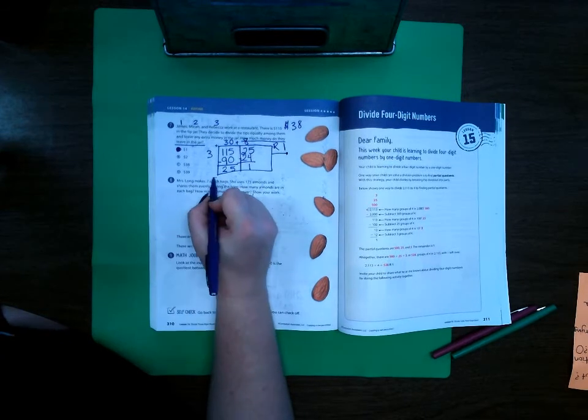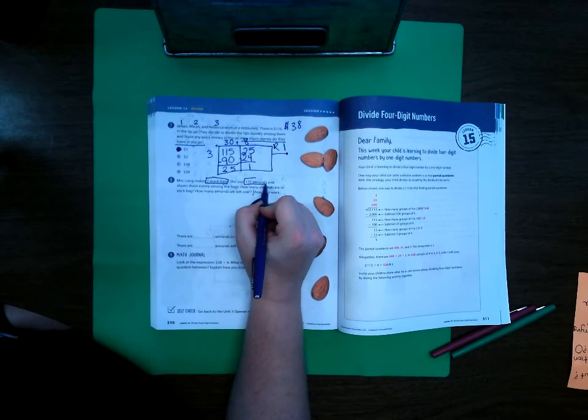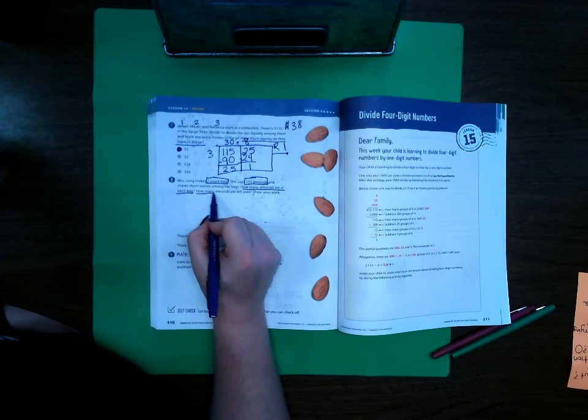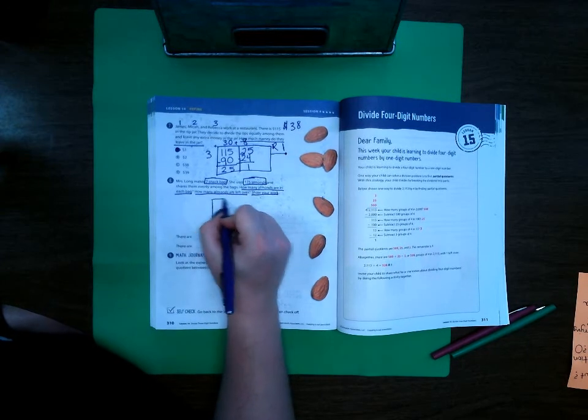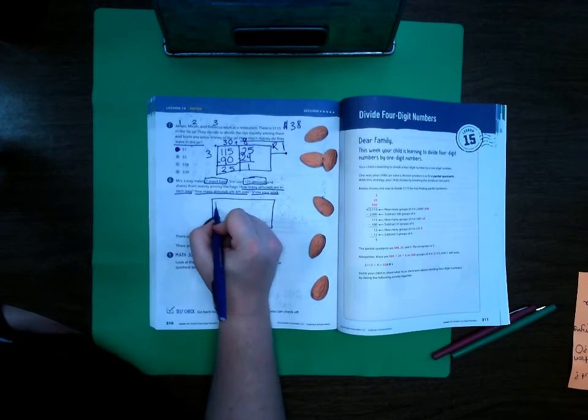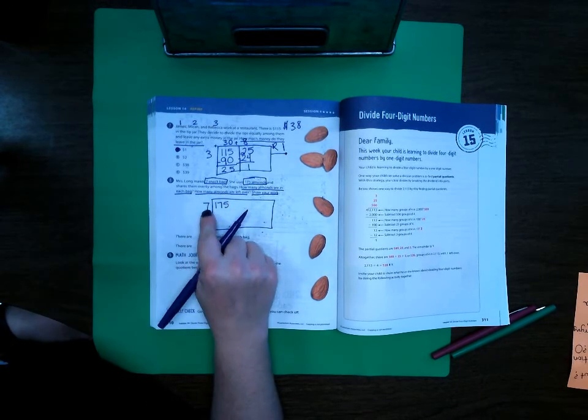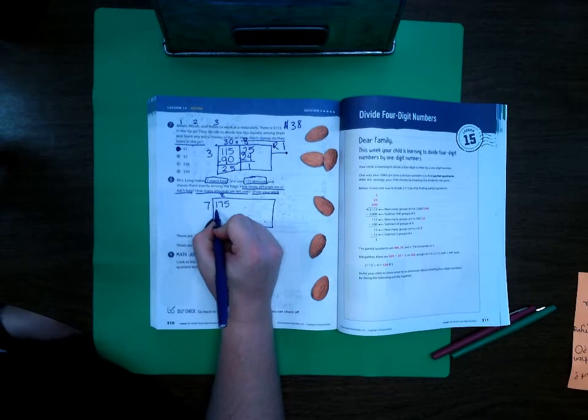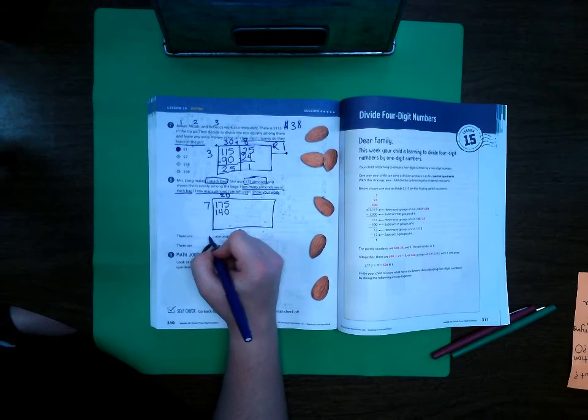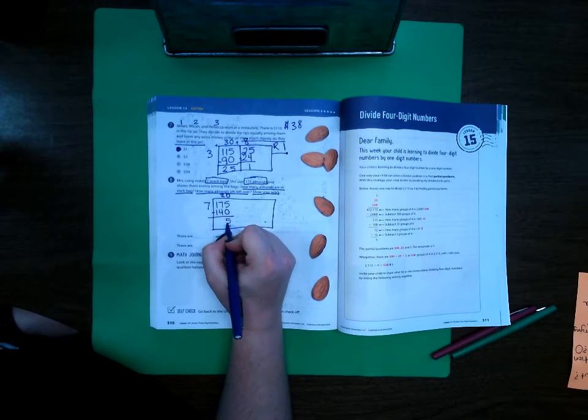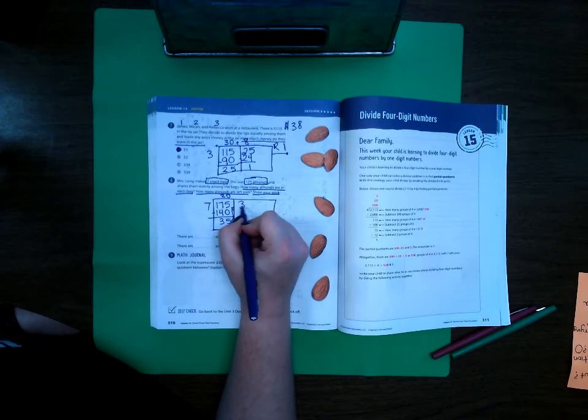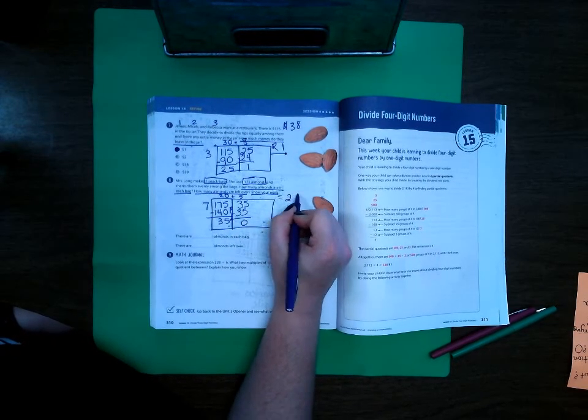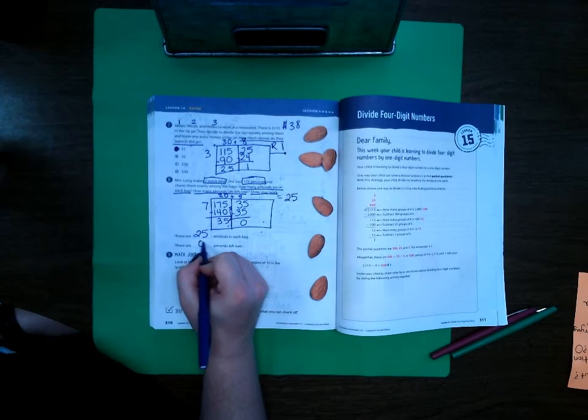Miss Long makes seven snack bags. She uses 175 almonds and shares them evenly among the bags. How many almonds are in each bag, how many almonds are left over? Show your work. OK let's go ahead and make our area model. 175 divided by 7. Well 7 can't go into 1 but 7 can go into 14. 7 times 2 is 14. I'm going to add a 0 on both of those, subtract. That means 5, 35 left over. Carry that up here. 7 times 5 is 35. So that means that there's 25 almonds in each bag and there's no almonds left over.